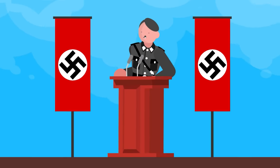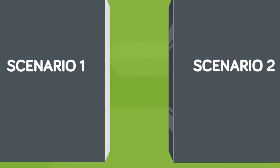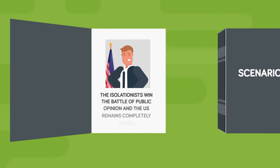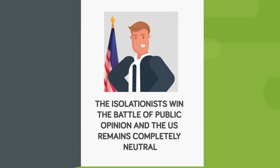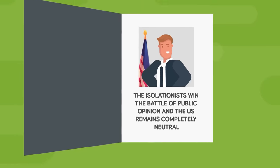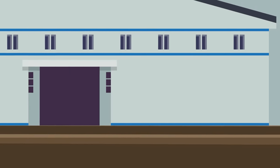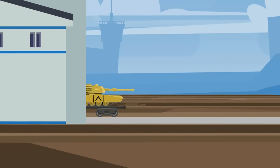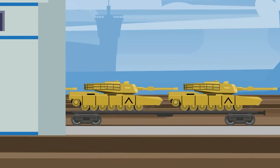But what if America had stayed out? The best way to tackle this question is to pose two different scenarios at the same time. In one scenario, the isolationists win the battle of public opinion, and the US remains completely neutral. This means no military assistance to Britain, as well as no entry into the war. In the second scenario, the US continues providing assistance to Britain, but doesn't join the fighting itself, similar to how the United States is handling the Russian invasion of Ukraine today.